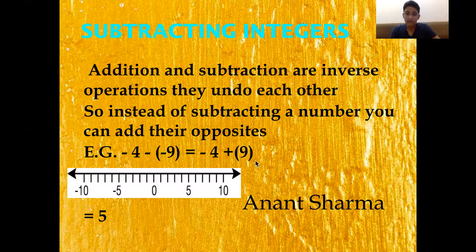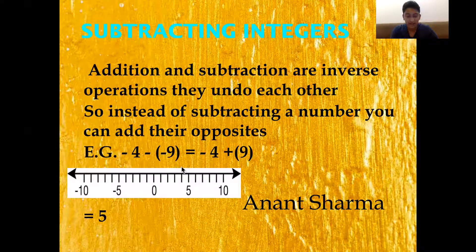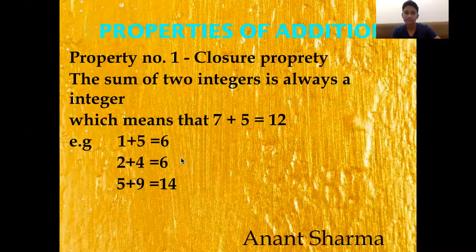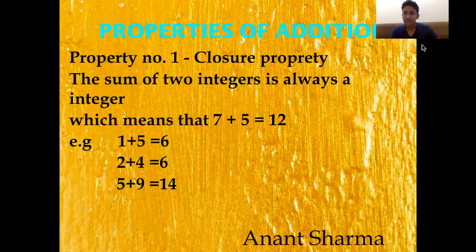Now let's solve minus 4 plus 9 using a number line. Here is 9 and here is minus 4. If we add 9 to minus 4, counting 1 through 9 steps to the right, we get 5. So minus 4 plus 9 equals 5. Now let's talk about the properties of addition.